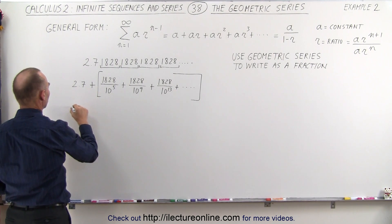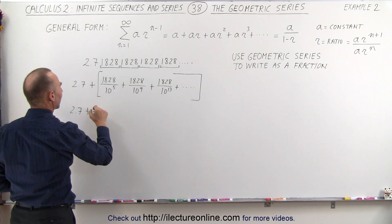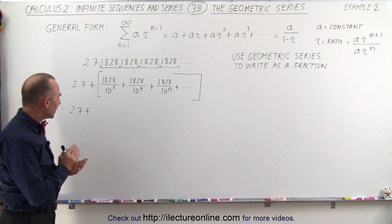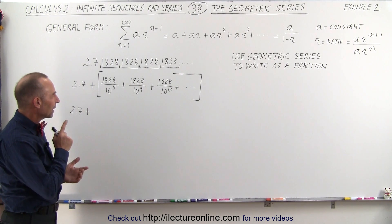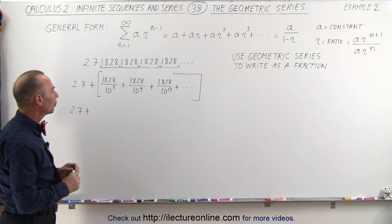We can say that this is equal to 2.7 plus. So now we need to come up with a clever thing here. Let's try to find the ratio of two consecutive terms.